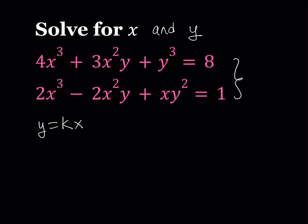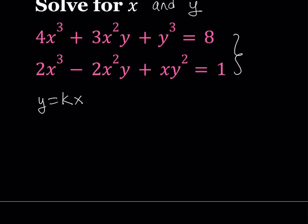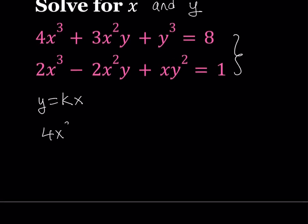So let's go ahead and substitute that into each equation here. So we're going to get 4x³ plus 3x² multiplied by kx plus k³x³. That's equal to 8.